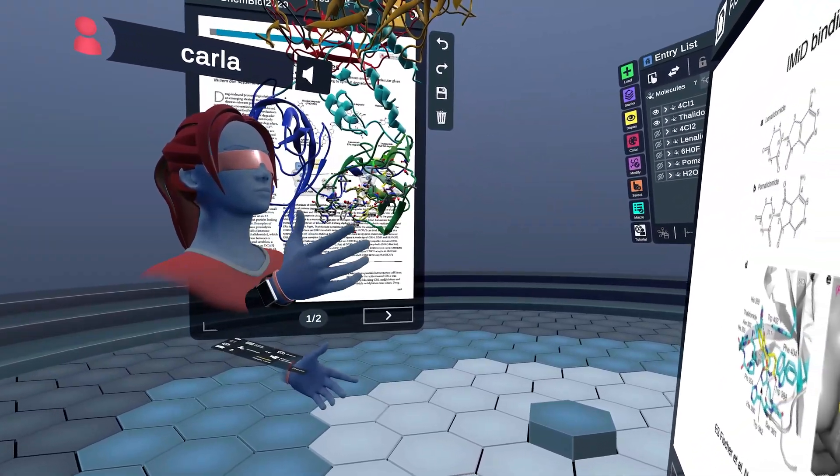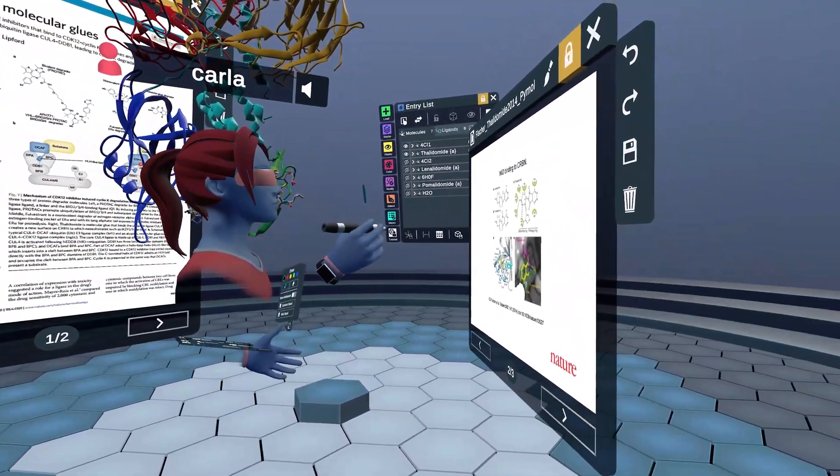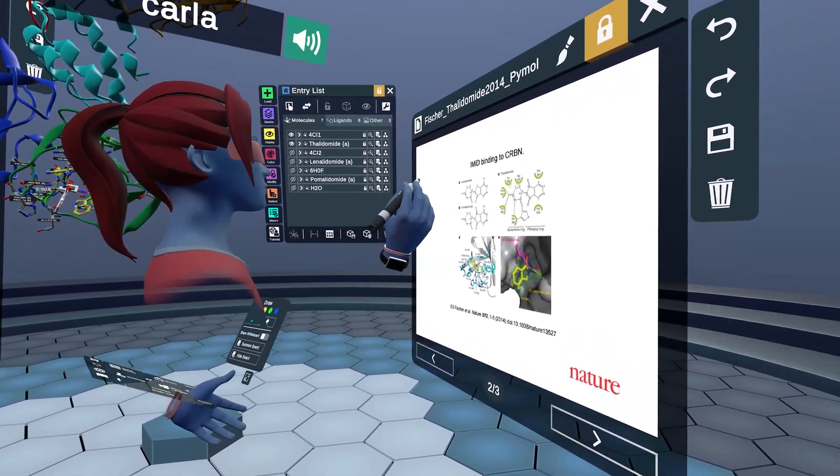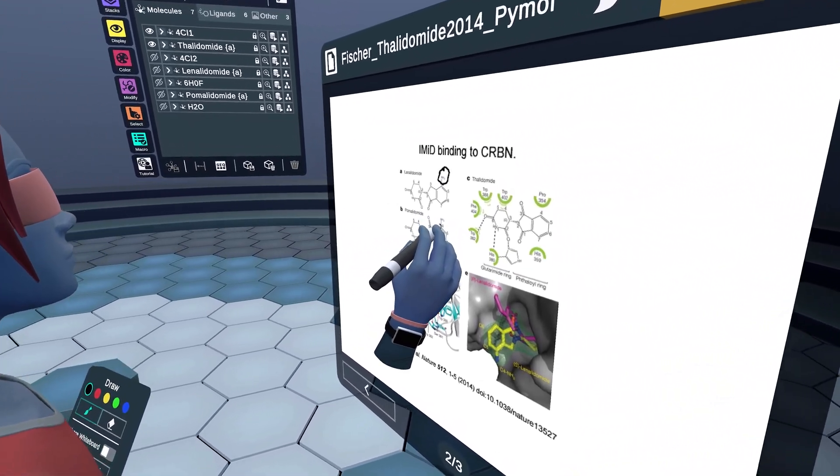Thalidomide has two other related analogs, lenalidomide and pomalidomide. Nanome allows me to highlight the differences between them. There's an amine present at C4 of the phthalimide group in both of those structures.